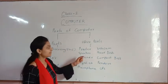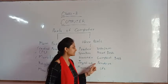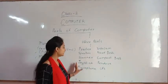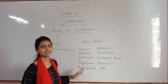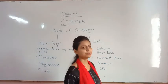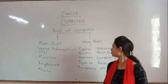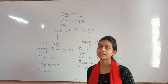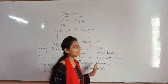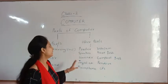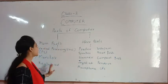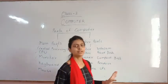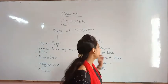The other parts are: printer, speaker, scanner, joystick, microphone, webcam, hard disk, compact disk, pen drive, and UPS. These are 10 other parts of the computer. If you want to work with a printer, you attach it to your computer, but it is not essential like the four main parts.